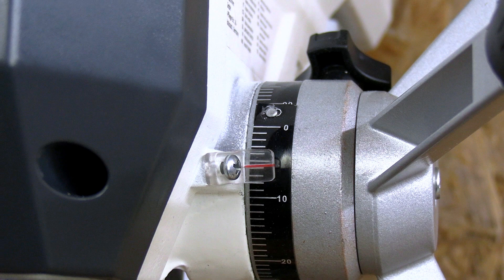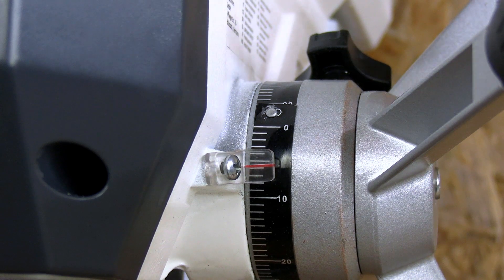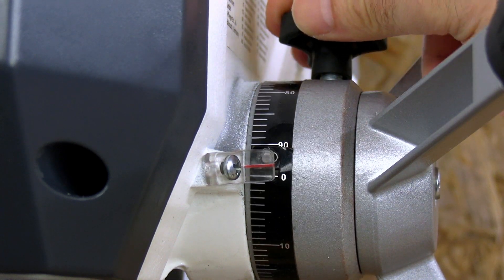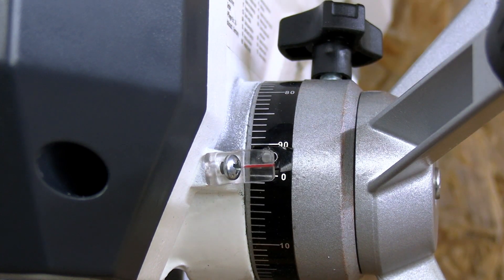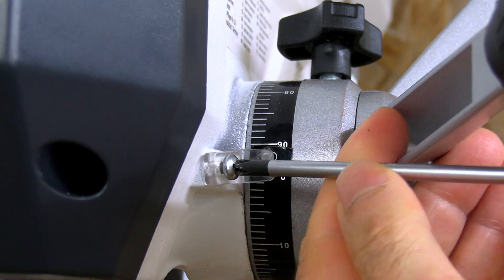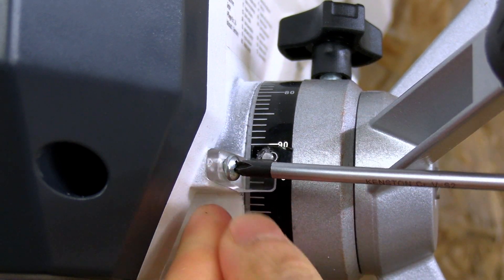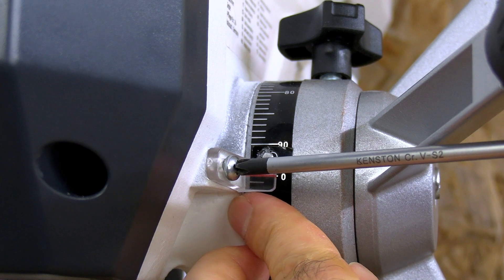Let's take a look at the depth stop. It is a very easy to adjust depth stop. First, I'm going to align the mark with zero. I bring the knob to the stop and adjust the mark. Each mark is one millimeter that the chuck goes down.